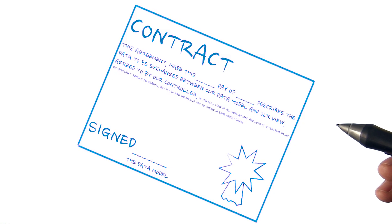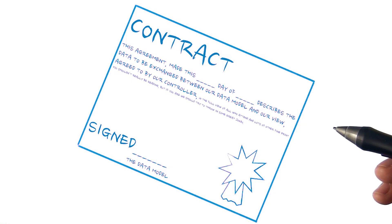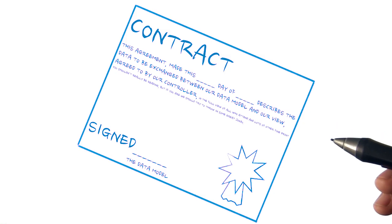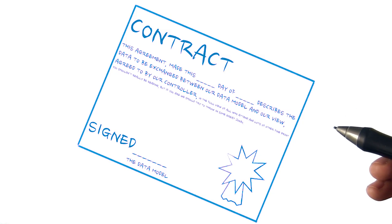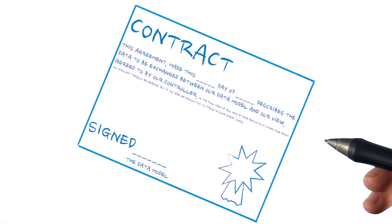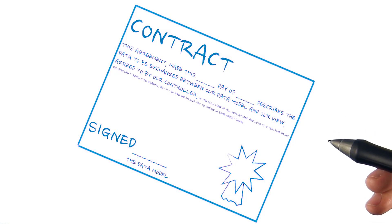The agreement in a contract is implemented in a contract class that contains a list of constants, typically database table column names, that are used to associate data from a data source within the UI of an application.